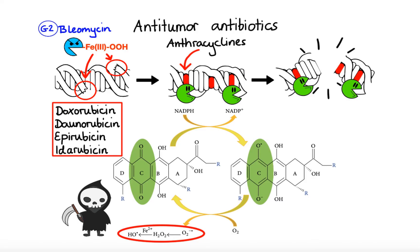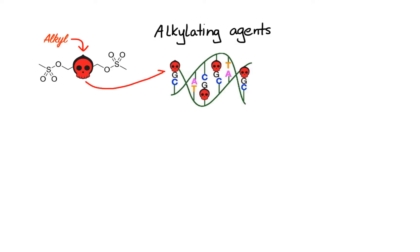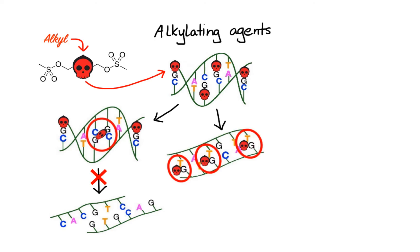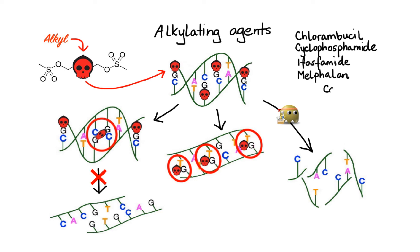Moving on to alkylating agents: these work by transferring their reactive alkyl group to DNA, particularly to the guanine base. This leads to formation of cross-linked bonds between functional groups in the DNA, which prevents DNA from being separated for synthesis or transcription. Furthermore, alkylated guanine bases may erroneously pair with wrong partners — adenine, thymine, or another guanine — quickly leading to permanent mutations if uncorrected. DNA fragmentation may also result from attempts by DNA repair enzymes to replace alkylated bases. Examples include nitrogen mustards such as chlorambucil, cyclophosphamide, ifosfamide, and melphalan; nitrosoureas such as carmustine and lomustine; triazines such as dacarbazine and temozolomide; and alkylsulfonates such as busulfan.